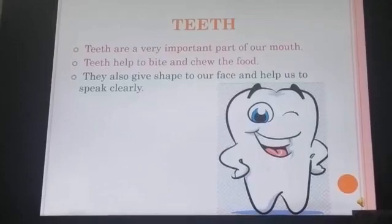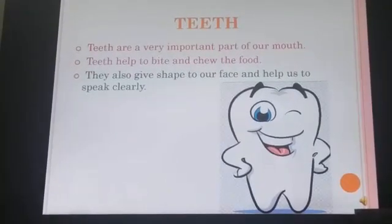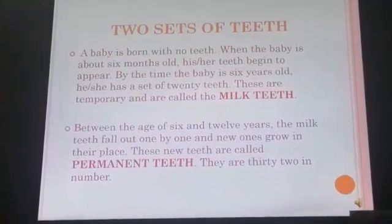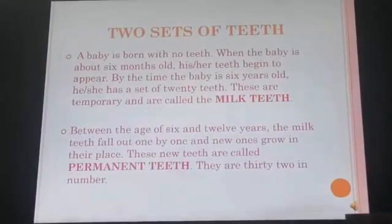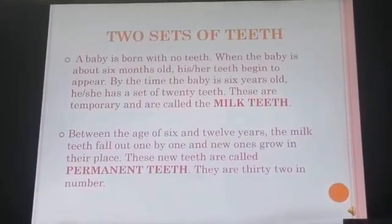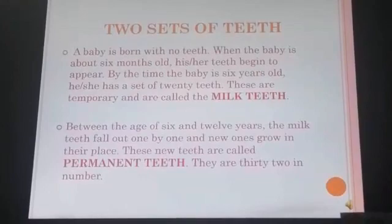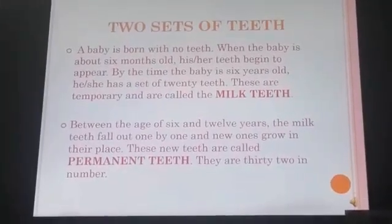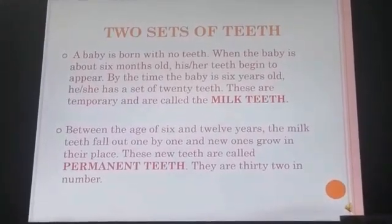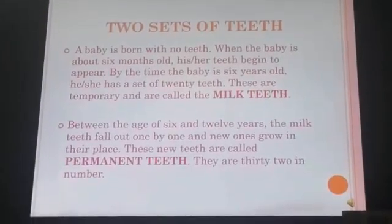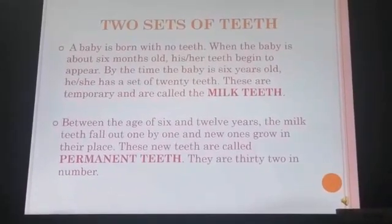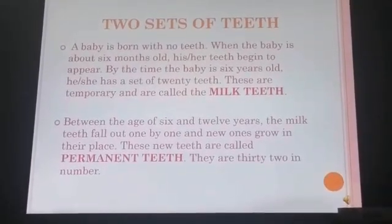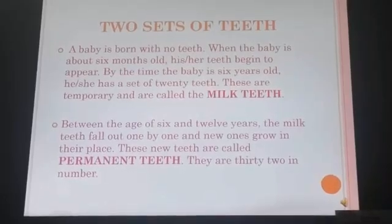Teeth give shape to our face and help us to speak clearly. In a human's lifetime, there are two sets of teeth. The first set is known as milk teeth, that is temporary teeth. They appear between 6 months to 6 years. The second set of teeth is for the whole lifetime and they are called permanent teeth. They appear between the age of 6 to 12 years and are 32 in number.